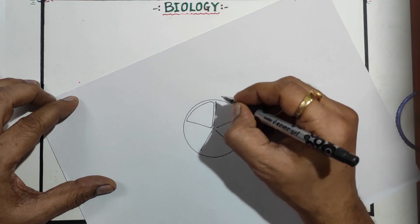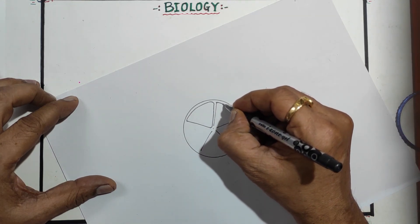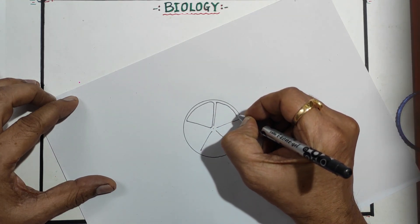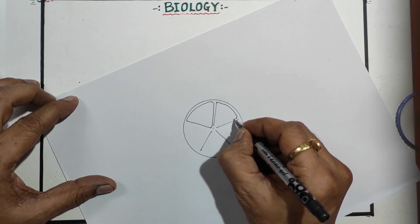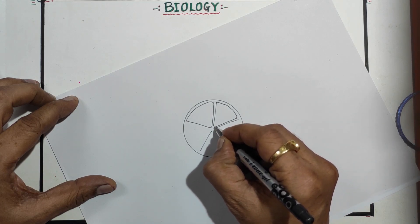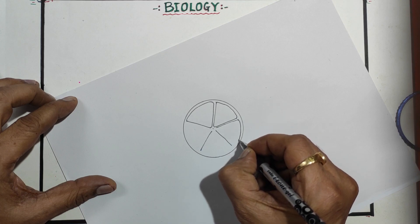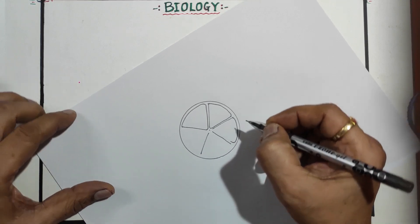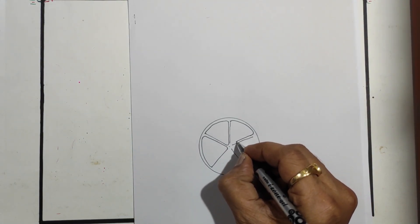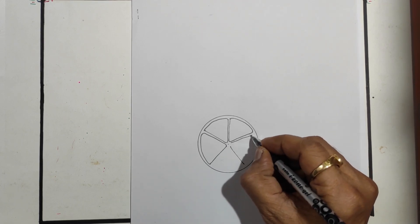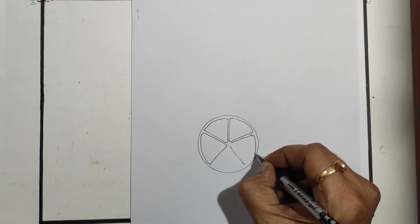From here draw like that, don't touch this line, bring this line down and touch here. Same way, this line continues here without touching this, bring it here and touch here.